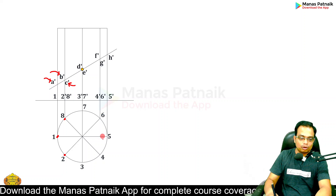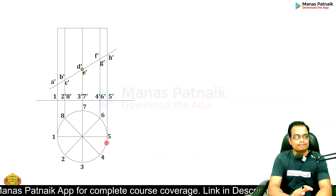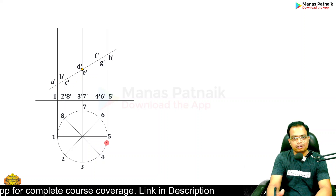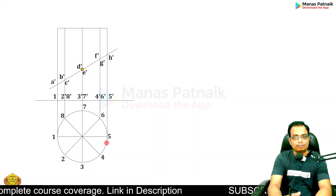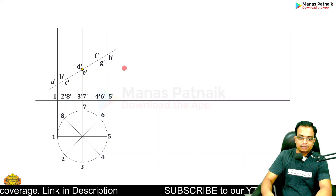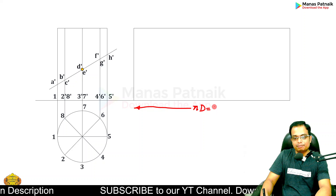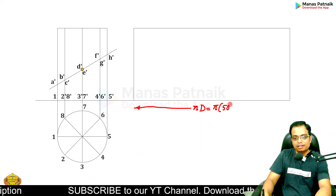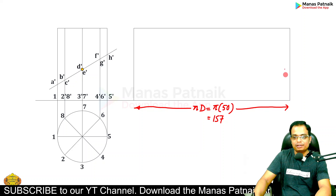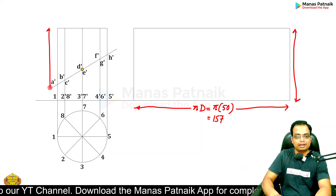Similarly, you can identify all the remaining cutting points. The development of a cylinder, on a very basic level — if it is not being cut by any section plane — is a rectangle. The base of the rectangle is equal to πd, that means π × 50, which approximately equals 157. So the base is 157, and the height equals the height of the cylinder.